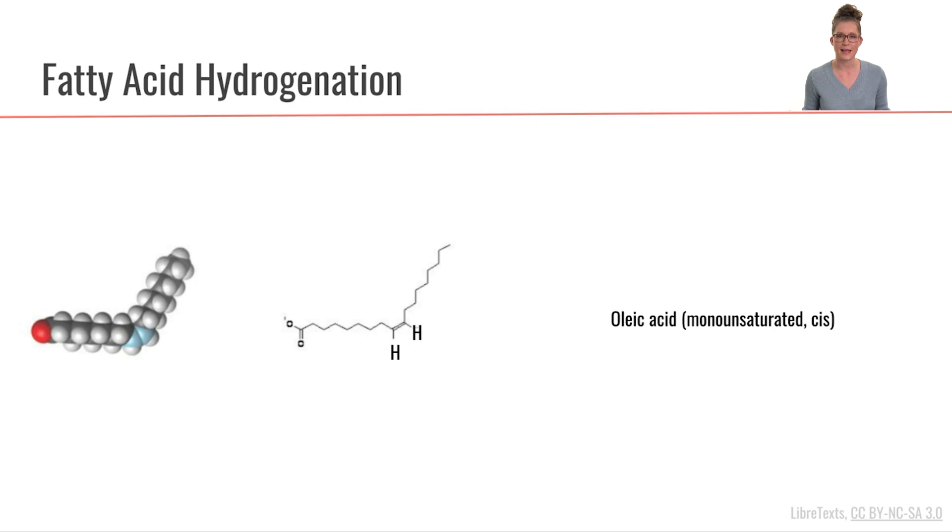So they started using a process of hydrogenation where they add hydrogens to the fatty acid. So let's look at an example here. We're starting off with oleic acid. This is a monounsaturated fatty acid so we see it has one double bond.